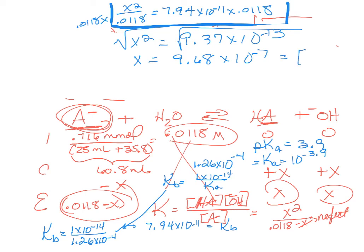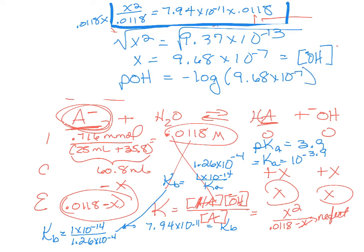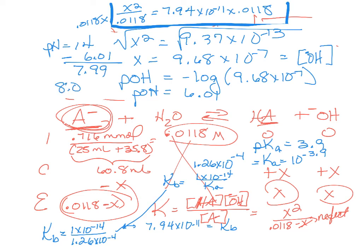Remember that x is the concentration of hydroxide since this was a base. So find pOH first: pOH is minus log of 9.68 times 10 to the minus 7, which gives 6.01. pH is 14 minus pOH, so pH equals 7.99, rounding to 8.0. And that is it — that is the answer, and that's all of the practice problems.